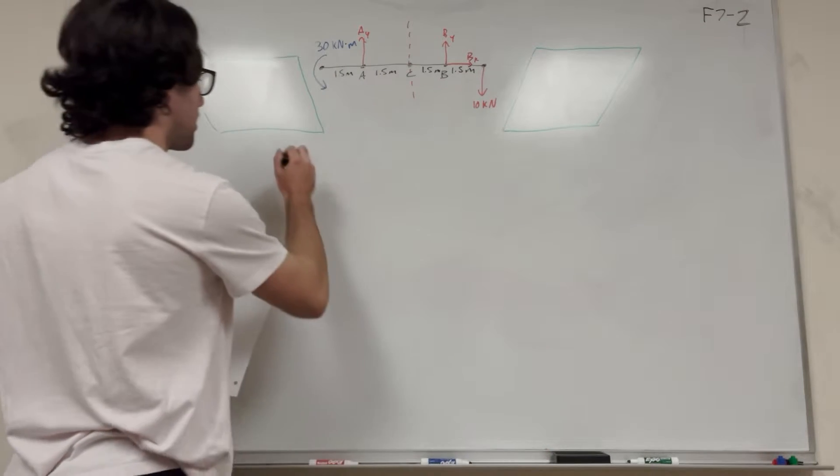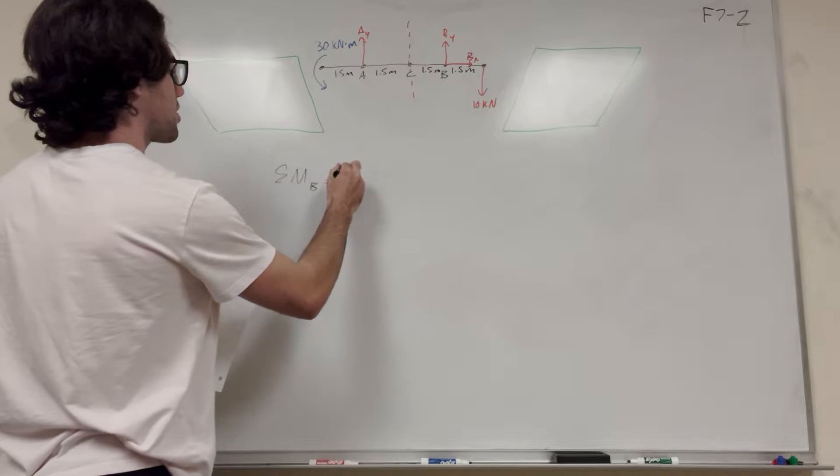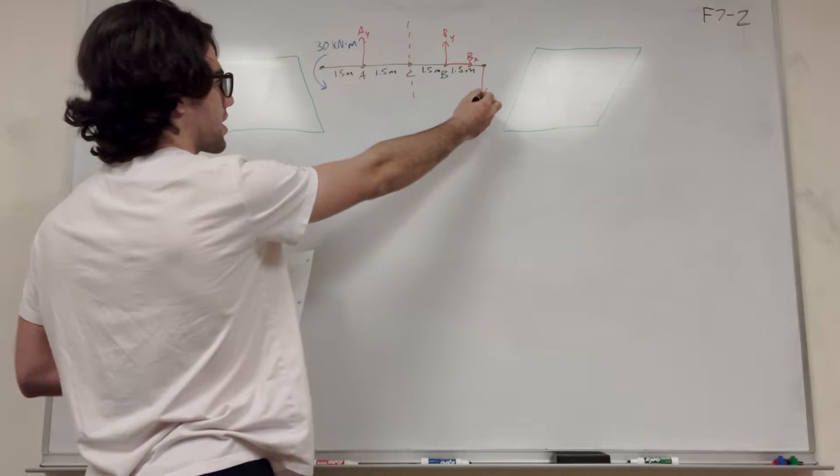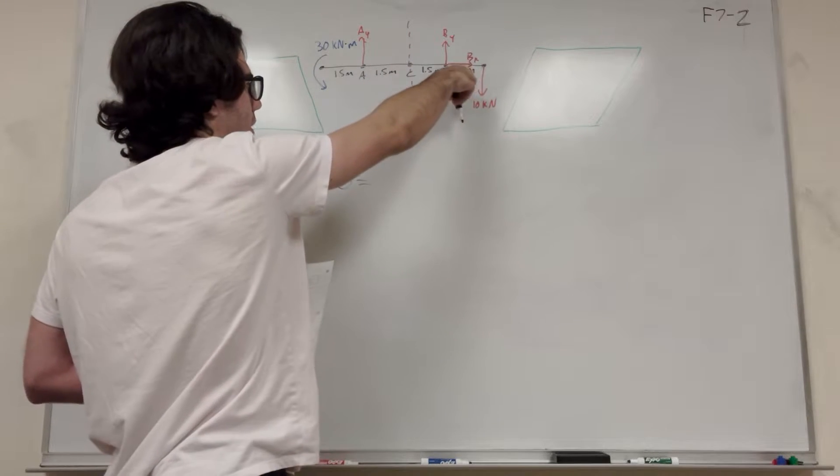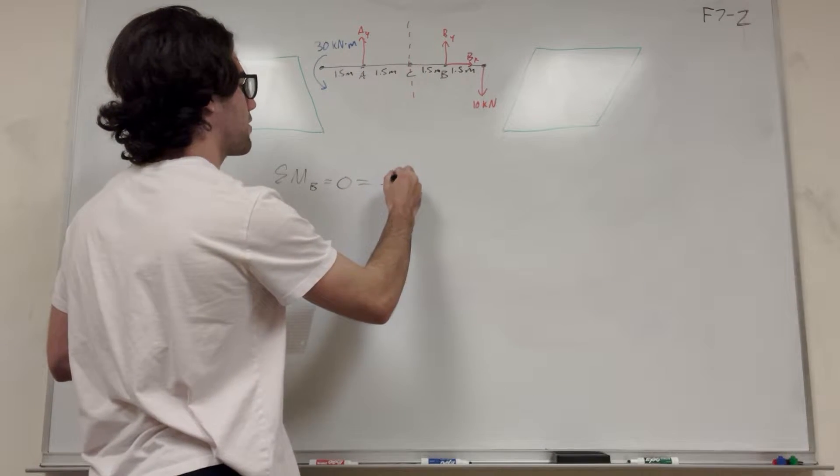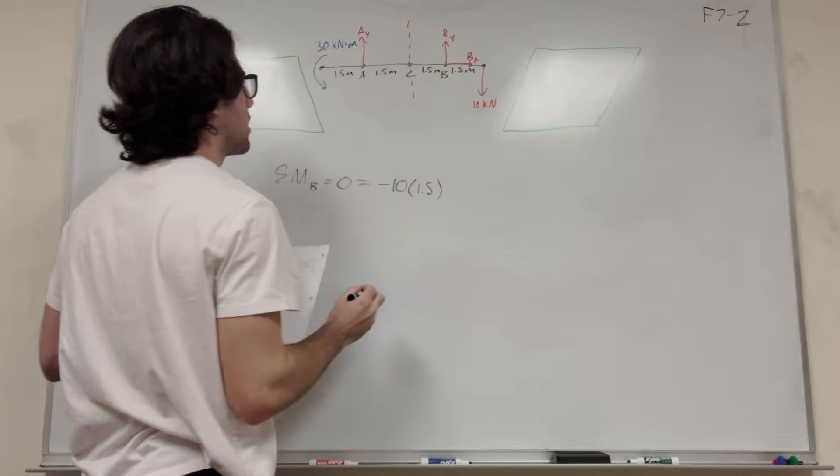So what that's going to look like, sum of the moments at B is equal to zero, of course. And sum of the moments at B, so let's start over here. So we have this 10 kilonewton force that's pushing down. It's going to make this one rotate clockwise around B, so it's going to be negative. Negative 10, and then its distance is 1.5 meters.